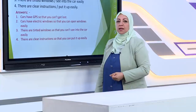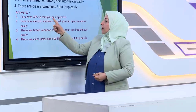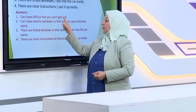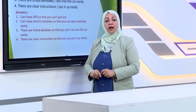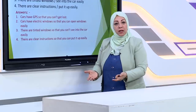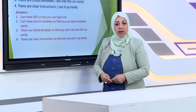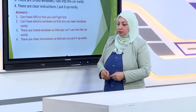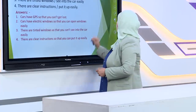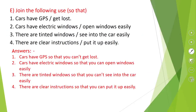We joined the sentences using 'so that.' After 'so that,' we place the subject 'you,' then either 'can' or 'can't' depending on whether the action is possible. Note that after 'can' and 'can't,' we always use the base form of the verb: so that you can open, so that you can't see, so that you can put it up easily.